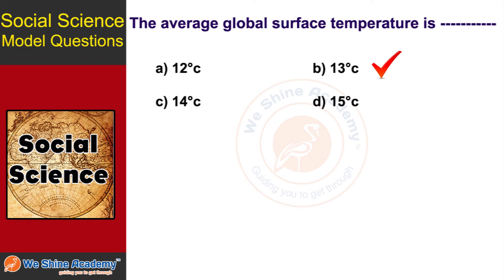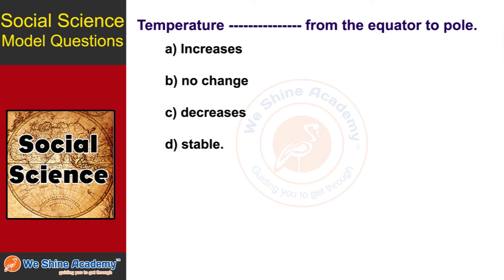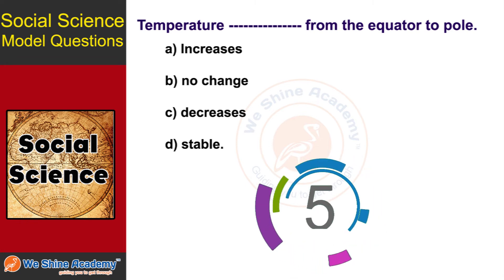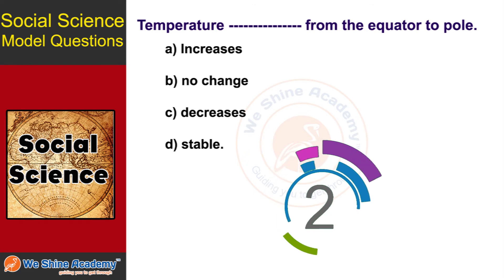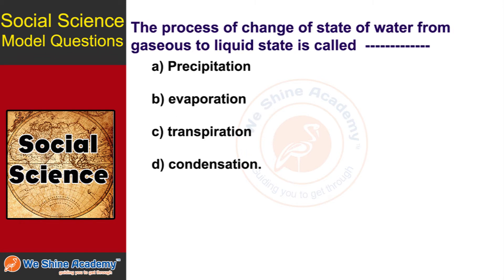The next question is: temperature dash from the equator to the poles. The answer is Option C: Decreases. Temperature decreases from equator parts to pole parts.